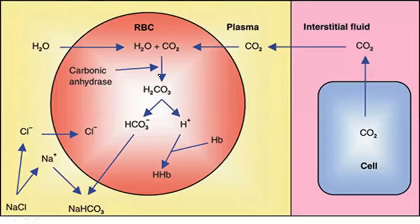Now, in Hamburger's Phenomenon or the Chloride Shift: hydrogen ion concentration increases inside the RBC. These hydrogen ions are buffered by hemoglobin to prevent a drop in pH. The bicarbonate ions move out of the RBC into the plasma, and to maintain electrical neutrality, chloride ions move from the plasma into the RBC.